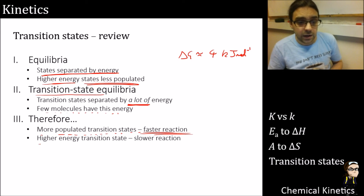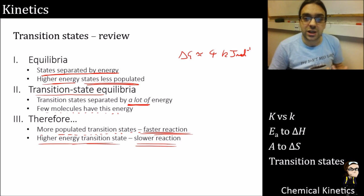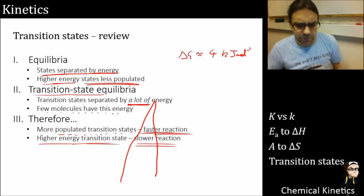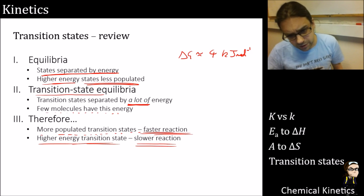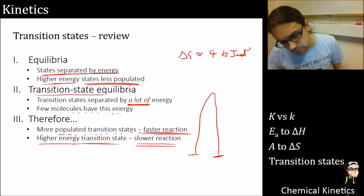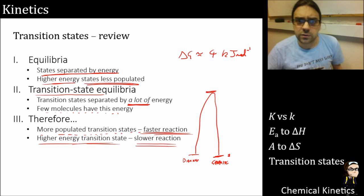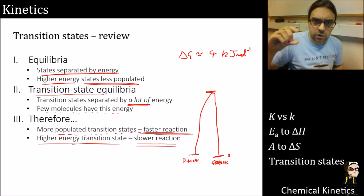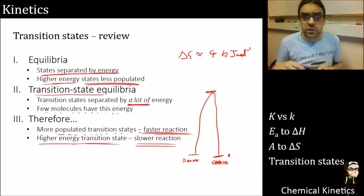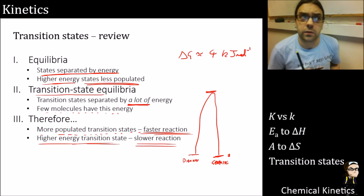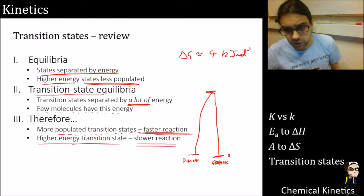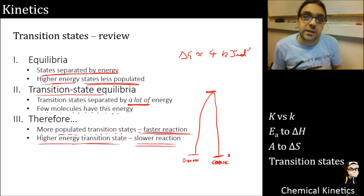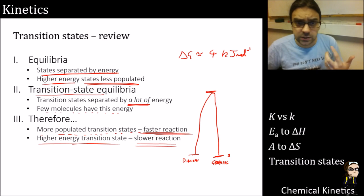A more populated transition state - or a lower energy transition state - means the reaction is faster. That is exactly what a catalyst does: it lowers the energy of the transition state so more molecules have that energy and things move faster. A higher energy transition state makes the reaction slower. For diamond to graphite, the transition state is staggeringly high - to scale on the diagram, if the energy difference is a couple of centimetres, the transition state is about 10 metres above you.